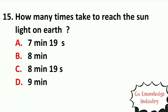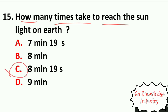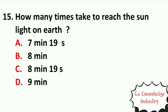Question fifteen: how long does sunlight take to reach the Earth? Option A, 7 minutes 19 seconds. Option B, 8 minutes. Option C, 8 minutes 19 seconds. Option D, 9 minutes. The right answer is Option C — 8 minutes 19 seconds.